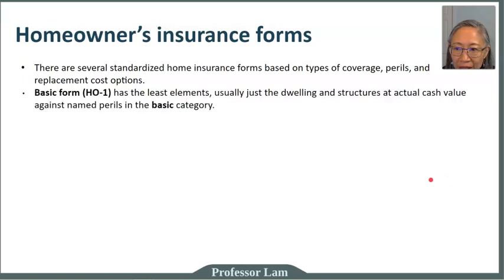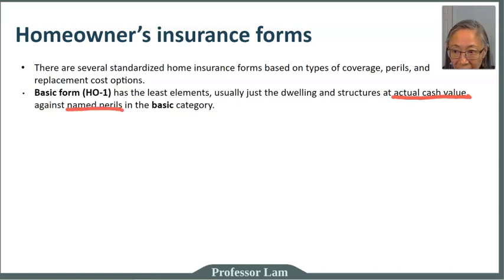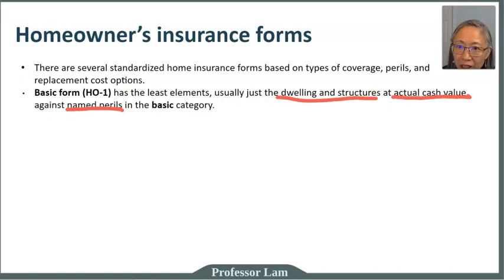The first is Basic Form HO-1. As the name implies, it is the most basic — it provides only cash value, not replacement cost, covers only basic named perils, and covers just the dwelling and structure. There is no bodily injury coverage and no personal liability. Basic form is very basic.